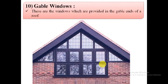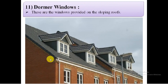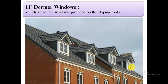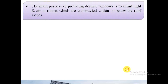10. Gable windows. It is a vertical window provided in the gable end of the pitched roof. 11. Dormer window. It is a vertical window provided on the sloping roof. Such windows provide ventilation and lighting to the enclosed space below the roof. Also, it improves the appearance of the building.